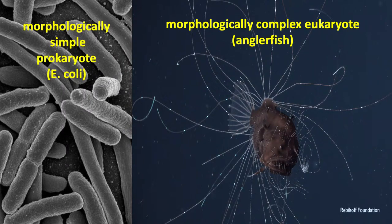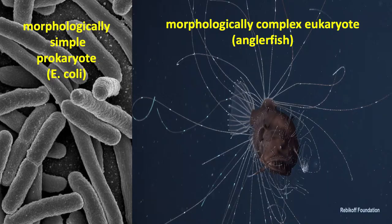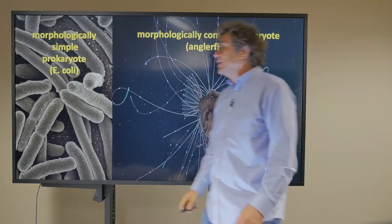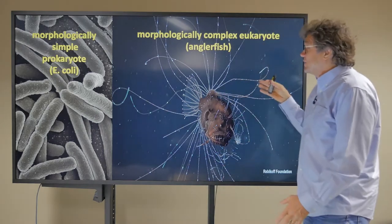Now the reason some people think that is because when you look at bacteria, they're morphologically simple. This is a bunch of E. coli, and they just look like elongated blobs. And if you look at a eukaryotic, a morphologically complex eukaryotic like an angler fish with jaws and eyeballs and ears and all kinds of crazy things.